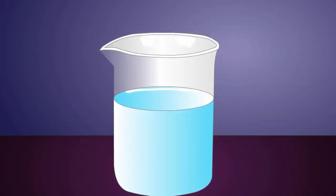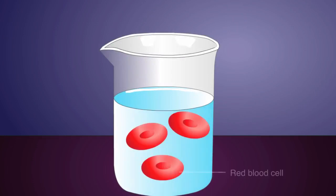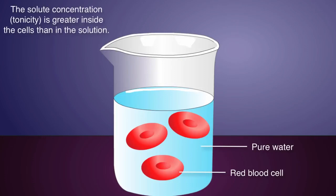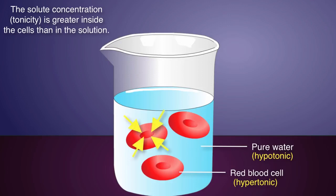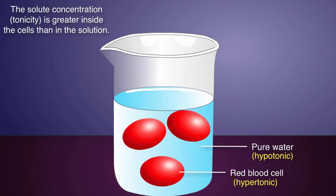To demonstrate how tonicity affects a cell, let's place some red blood cells into a beaker containing pure water. In this case, the solute concentration is greater inside the cells than in the surrounding water. In other words, the contents of the cells are hypertonic in relation to the hypotonic contents of the beaker. Because of this, osmotic pressure results in the diffusion of water across the membrane and into the cells. Over time, if enough water enters the cells, the cell membranes may burst. This is called lysis.